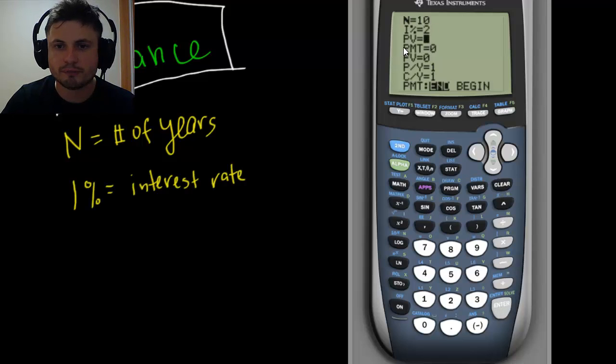The next value is PV, and that's present value. This is how much money we have right now. Now there's a thing here: you have to enter it as a negative number because technically you're depositing money, you're losing money. So we're investing $1,000, you'll enter minus $1,000.